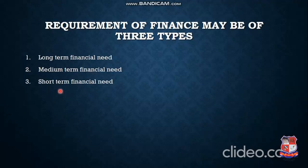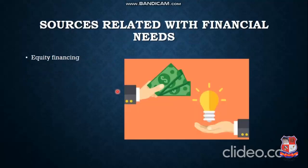The third and last is short-term financial need. This includes money that will be required in less than one year — 0 to 1 year. This money covers some kind of expense that you have not predicted. There will be some money required that is unexpected — you have not planned for it, but something happens and you need money. Those are included in this short-term financial need. These are the three types you can classify for financial needs. Now let us move to the sources — how to get the money.